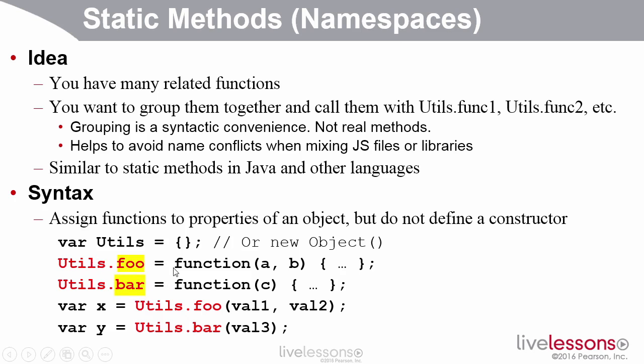So I say utils.foo equals such and such a function, utils.bar equals such and such a function. And then when I call it, I call it by its full name, utils.foo and utils.bar.